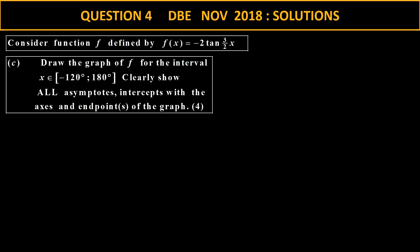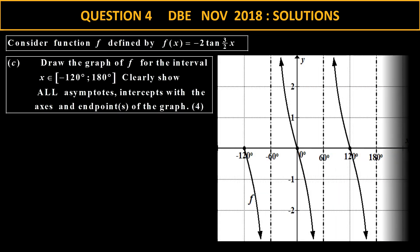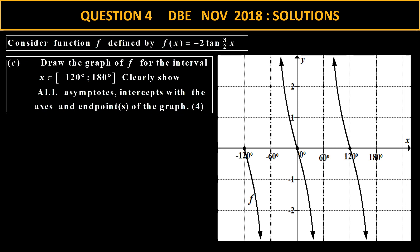Now we have to draw that particular graph — use your calculator. Take note of the steps and when you draw that tangent graph, that is what you get. We've drawn this from negative 120 to 180. The default asymptote is at 90, so I take 90 divided by 1.5, which gives an asymptote at 60. So this graph is correct — the asymptote is at 60.